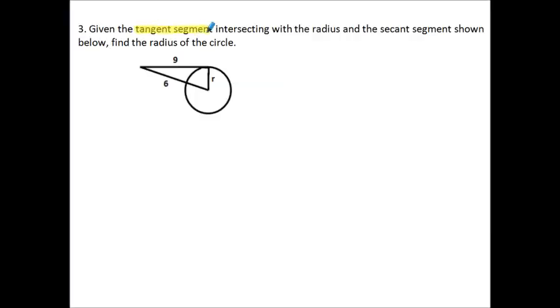Given the tangent segment intersecting with the radius and the secant segment shown below, find the radius of the circle. Now we're being told, yes, this is a right angle, and that makes this a right triangle.